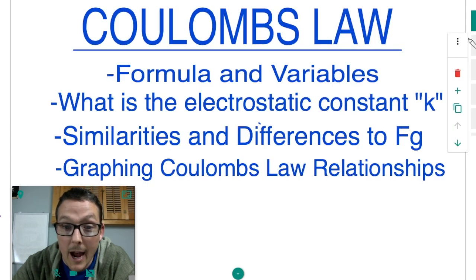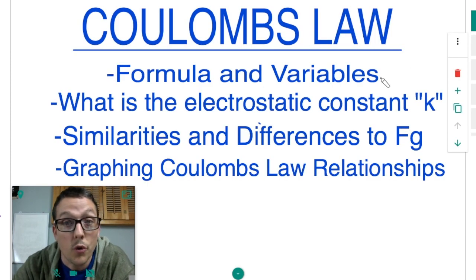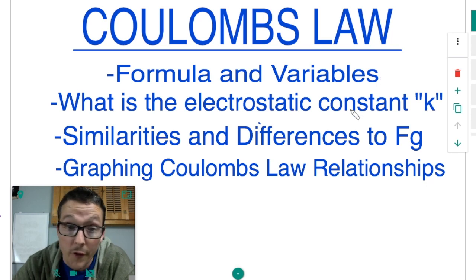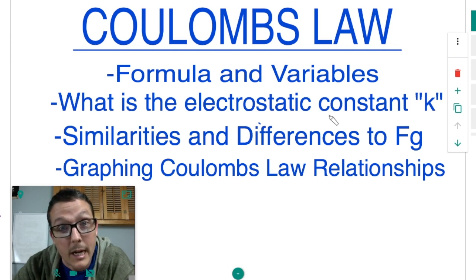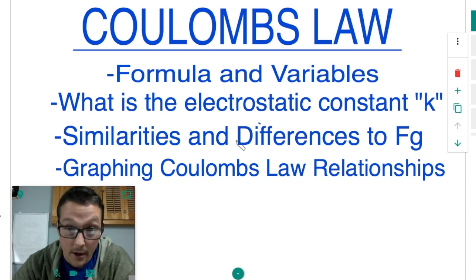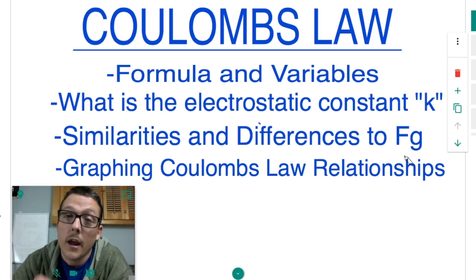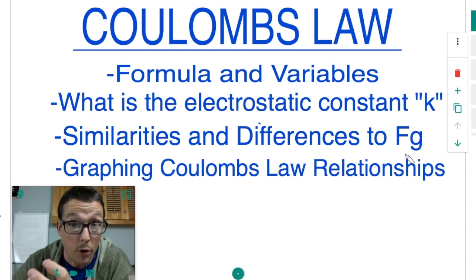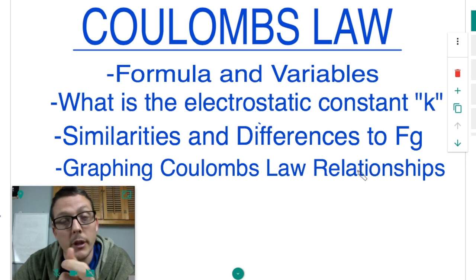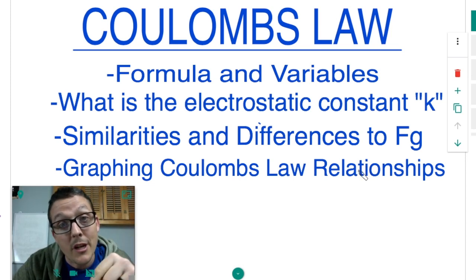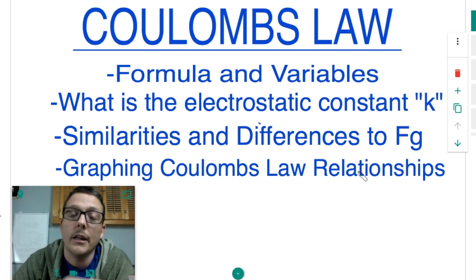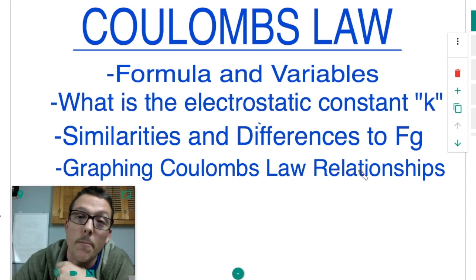I hope that helps. As you can see, we looked at the formula. FE equals K, Q1, Q2 over R squared. Don't forget the squared. The electrostatic force constant is going to be given to you, or it's going to be on some sort of reference table or cheat sheet that you're going to get. The similarities and differences, FG pulls and pulls only. And electrostatic force can pull or push. And we graph the relationships. Remember, as R goes up, FE is going to go down exponentially. And as Q goes up, FE goes up linearly. Hope that helps, guys. I'll see you on the next one.